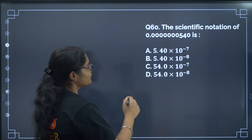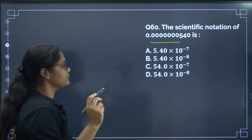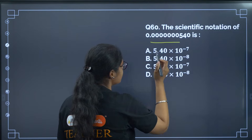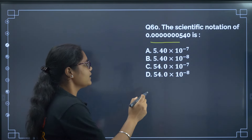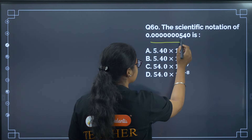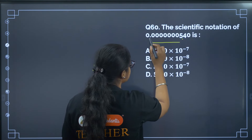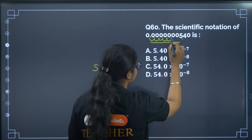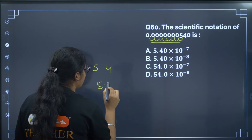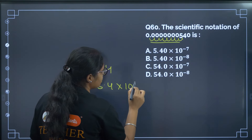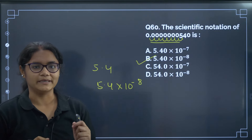Question 60: Scientific notation of the given number. In scientific notation, one digit is kept before the decimal. The decimal is placed to give 5.4, and counting the places moved gives 8 positions. So the answer is 5.4 × 10⁻⁸. Correct answer is option B.